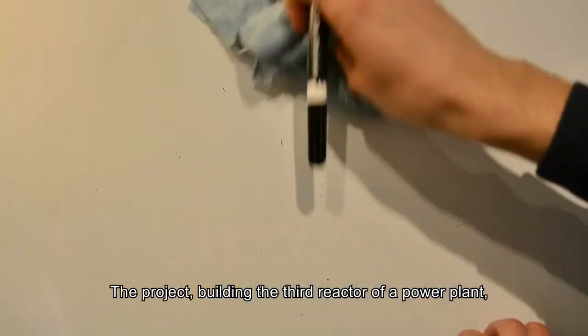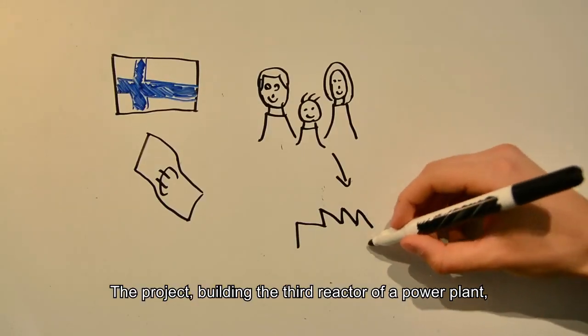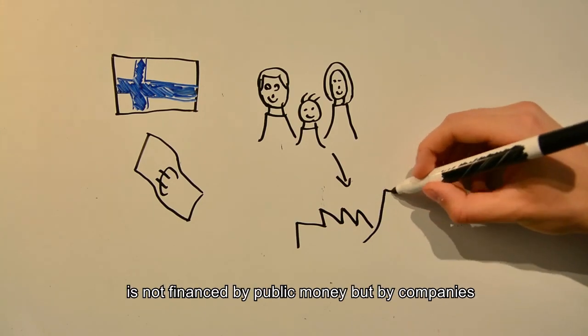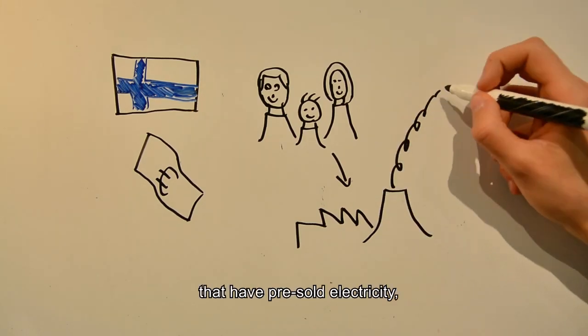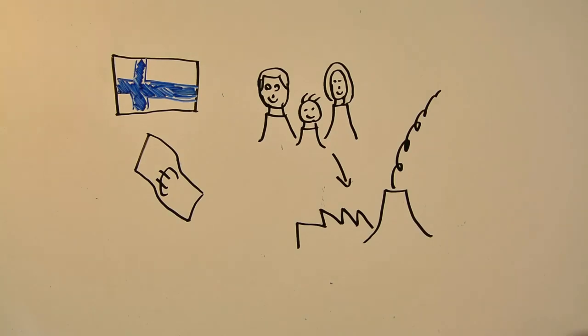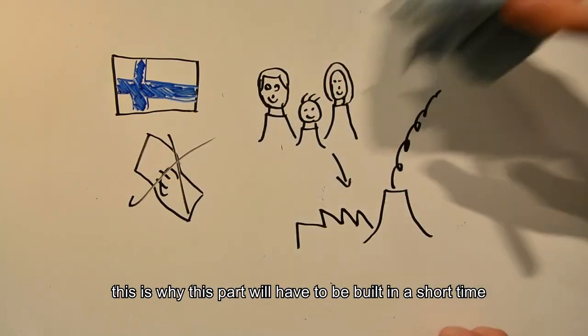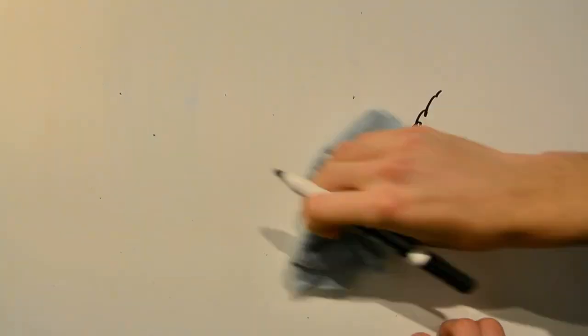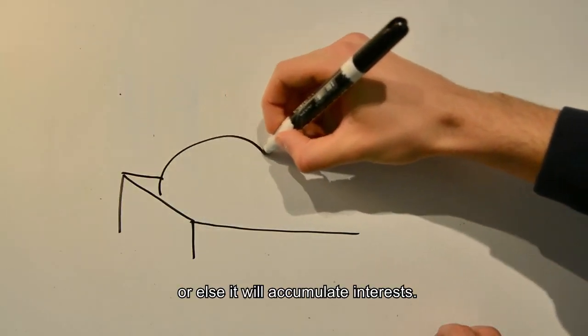The project building the third reactor of a power plant is not financed by public money, but by companies that have pre-sold electricity. This is why this part will have to be built in a short time or else it will accumulate interests.